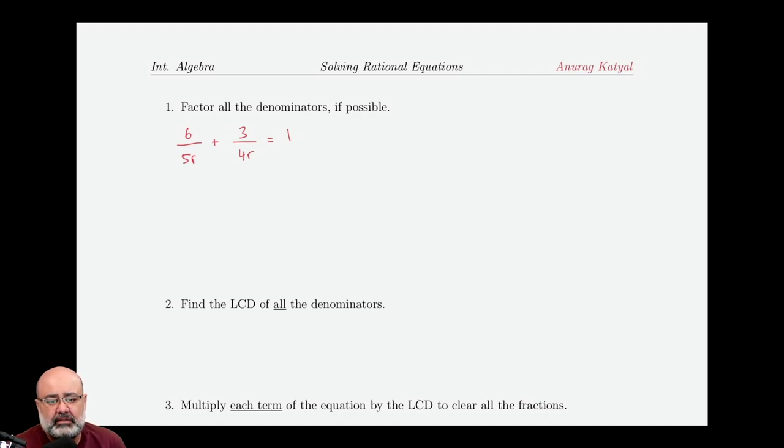In this equation, we're asked to solve 6 over 5r plus 3 over 4r equals 1. There's no multiple terms in the denominator. They're both monomials, so there's nothing to factor. We move on.